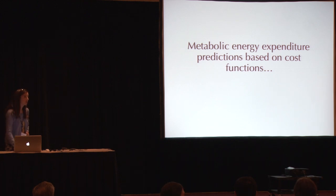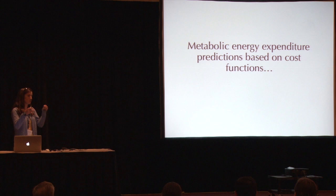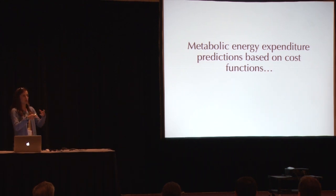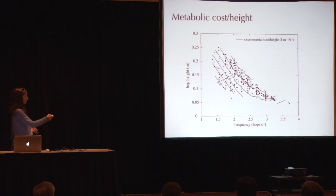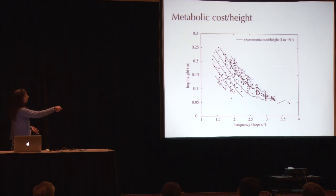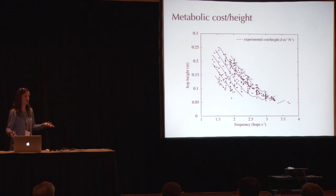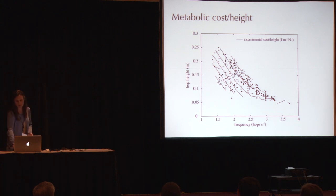In response to a question about the data points: each point represents an individual showing the frequency and height at which they attained a certain metabolic cost. The data points do cover the full range over which the cost contours are drawn.